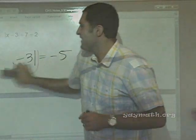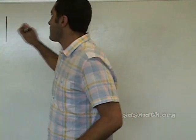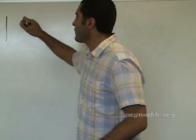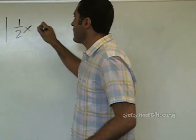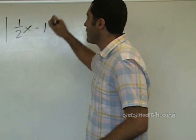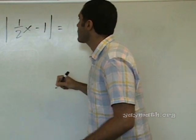Solve this: absolute value of one-half x minus 1 equals 2.